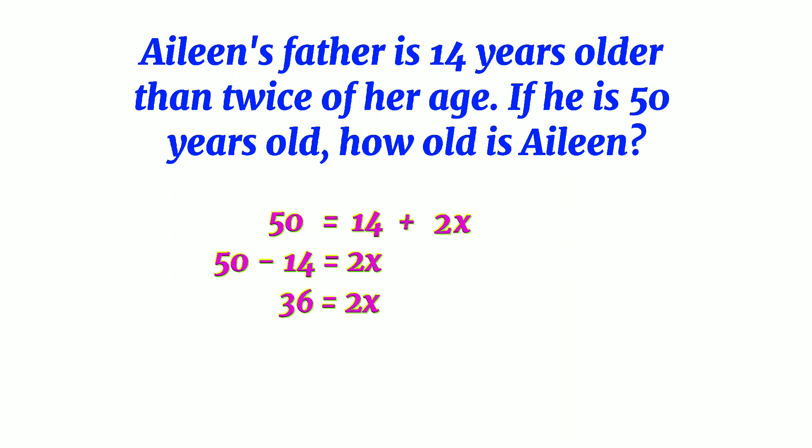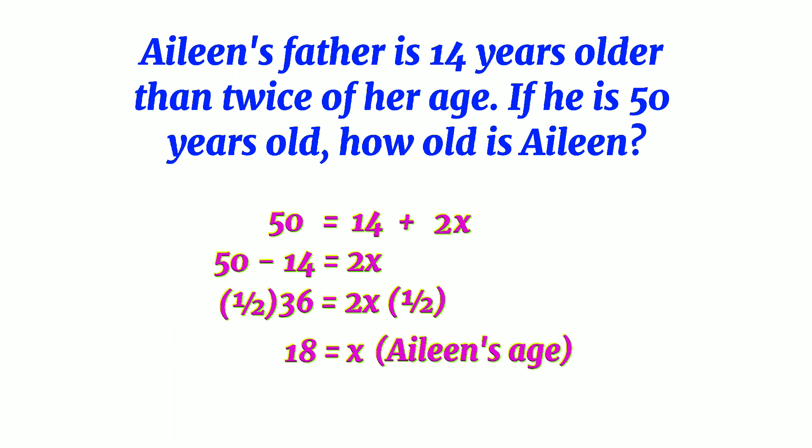Now we will remove the coefficient 2 by multiplying the whole equation by one half, which is the reciprocal of 2. Our final answer is 18 is equal to X — 18 is the age of Aileen.